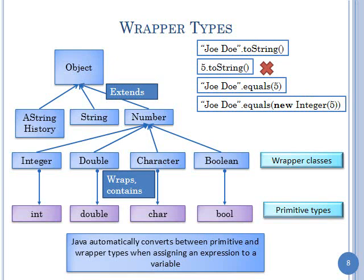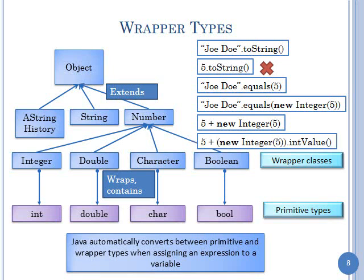So 'jodo.equals(5)' is equivalent to 'jodo.equals(new Integer(5))'. Can I say '5 + new Integer(5)'? I can say '5 + 6', or 5 plus anything that is an int. It converts — it takes new Integer(5) and converts it back to 5. It's equivalent to saying '5 + new Integer(5).intValue()'.